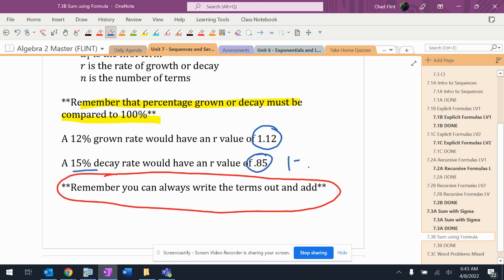15% decay rate is one minus 0.15, which is 0.85. 12% growth rate, one plus 0.12.